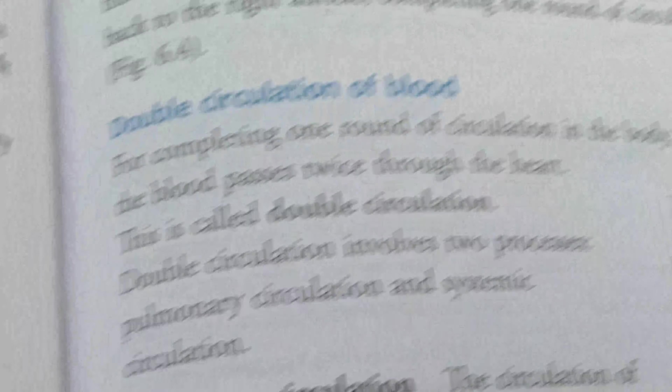Double circulation of blood: for completing one round of circulation in the body, the blood passes twice through the heart. Ek poora circulation complete karne ke liye, blood ko do times heart mein ghoomna padta hai. This is called double circulation. Complete one rotation karne ke liye, blood dobara heart mein ghusega aur dobara heart se release hota hai. This circulation is also known as double circulation.